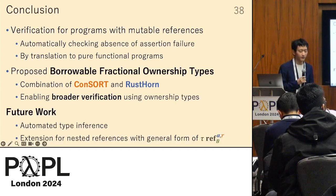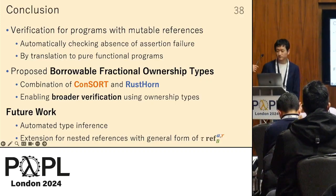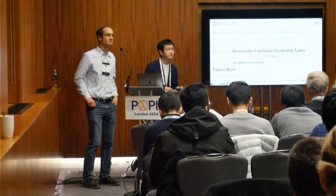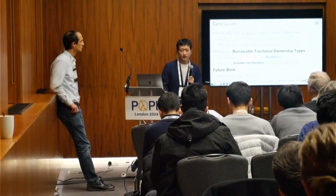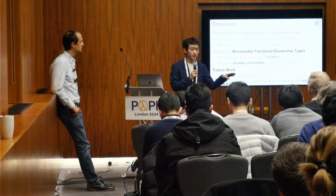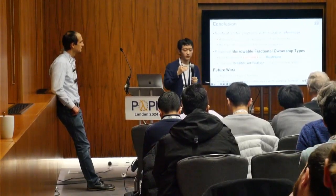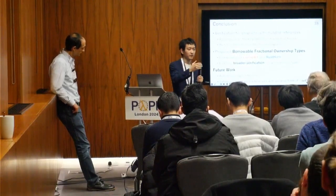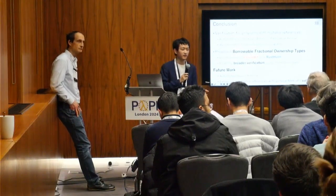Thank you for listening. During Q&A, a question was asked: are there any restrictions for the choices of lifetimes alpha and beta? If a lifetime is correctly given there is no restriction; however, the lifetimes do have an ordering, and the given lifetimes should have some total order in the typing.